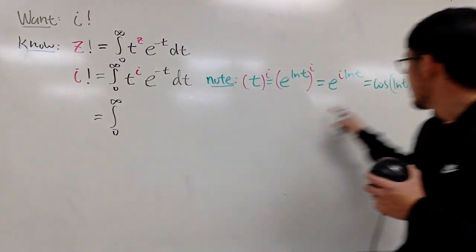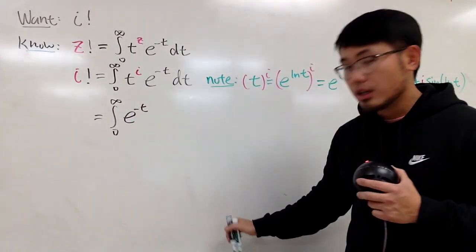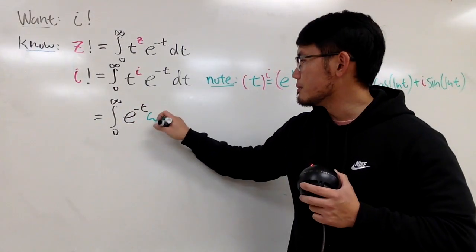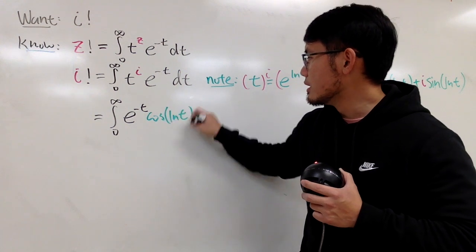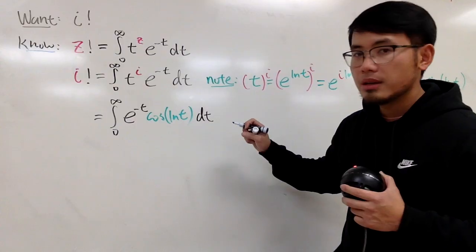So, we do e to the negative t times this guy, which is e to the negative t times cosine of ln t, like this. And, let me close this integral right here. So, put on dt. And the next, I will have to add.